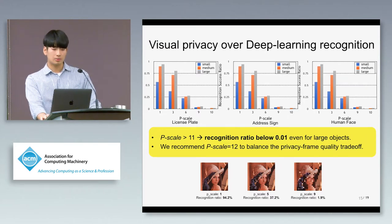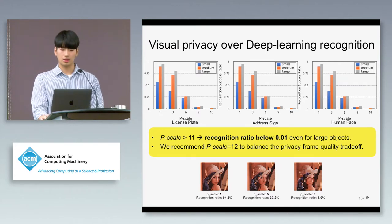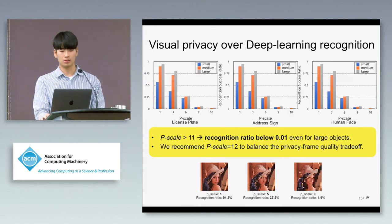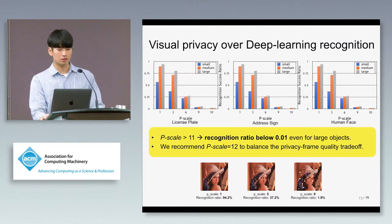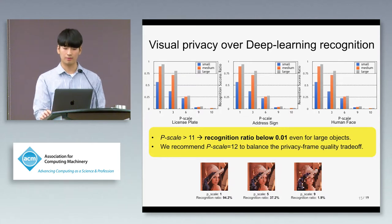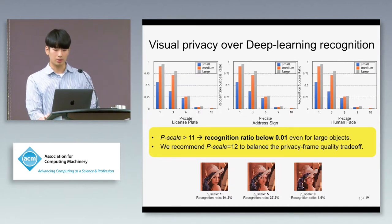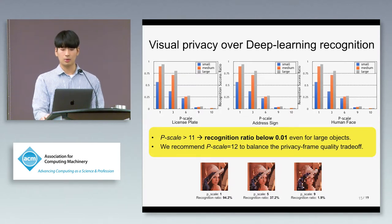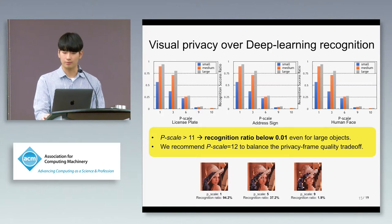The pixelation scale should be as minimal as possible while identifying sensitive objects. So we choose a pixelation scale of 12 for Pinto to balance the privacy and frame quality trade-off.